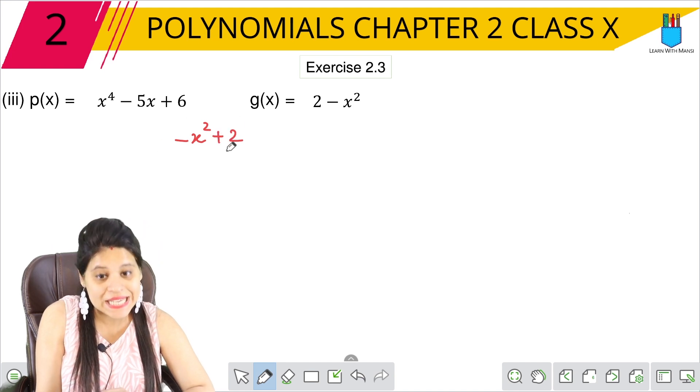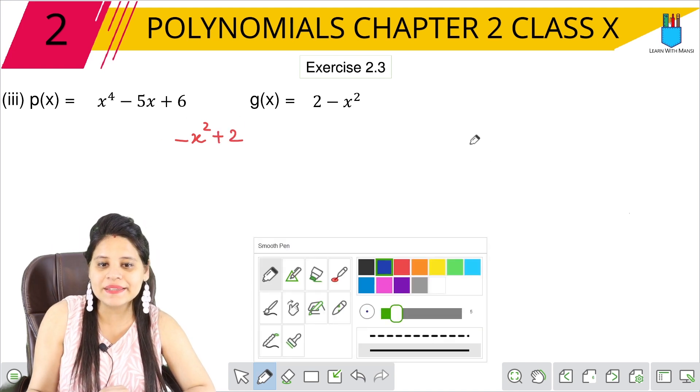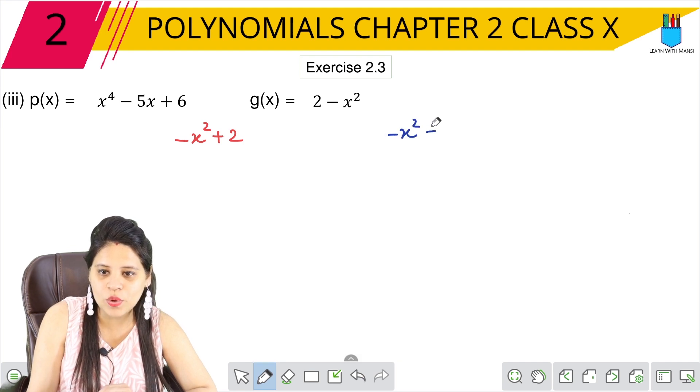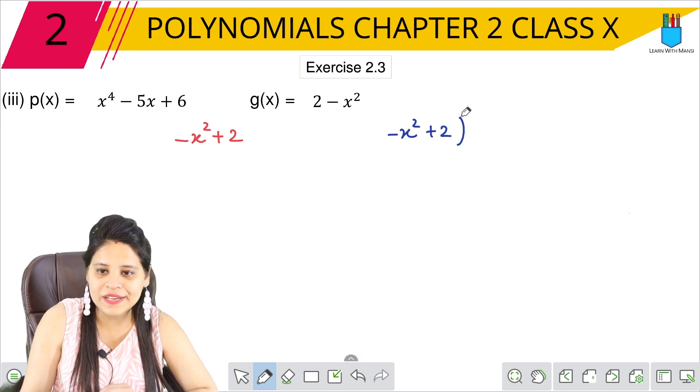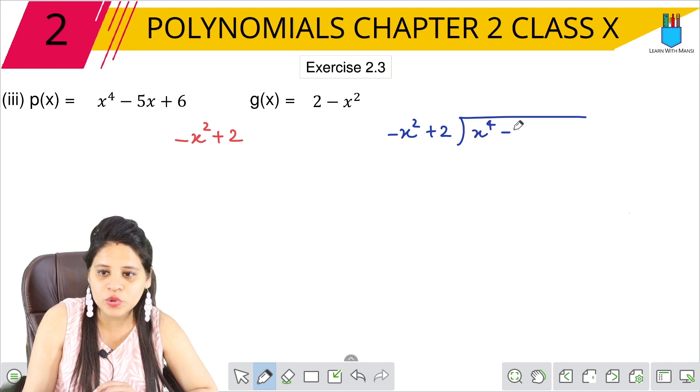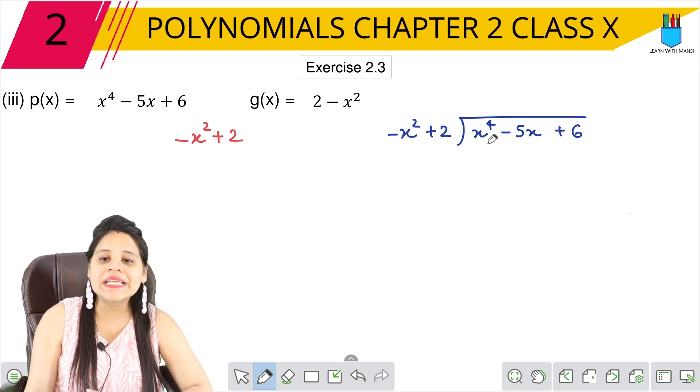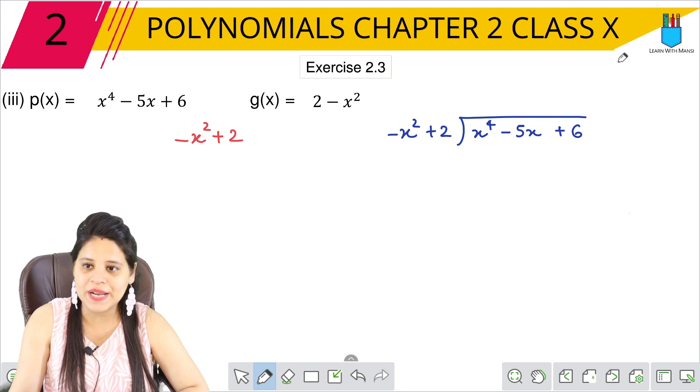So we have to divide this. Let's begin. Let's take minus x square plus 2, and what do we have? x raised to the power of 4 minus 5x plus 6. Okay? So now, minus x square to x⁴.